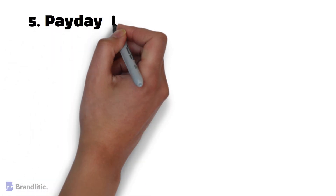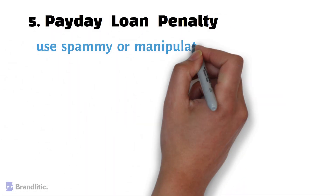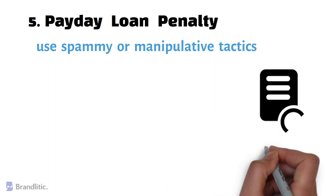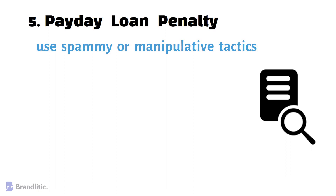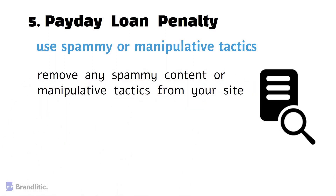The Payday Loan Penalty targets sites that use spammy or manipulative tactics to rank for payday loans and other high-interest queries. To fix this penalty, you need to remove any spammy content or manipulative tactics from your site.